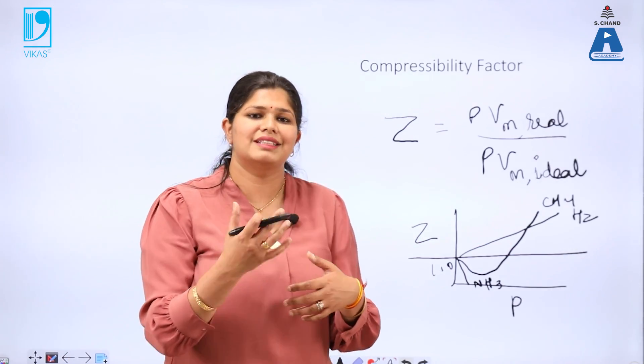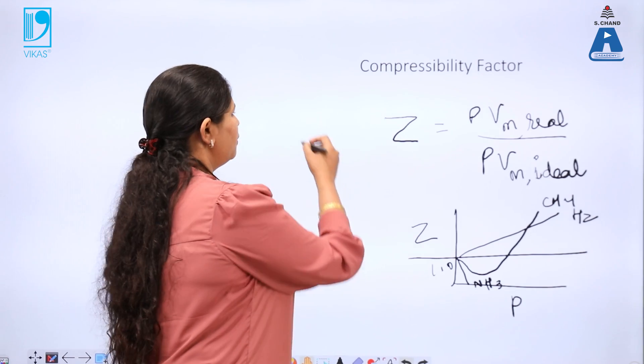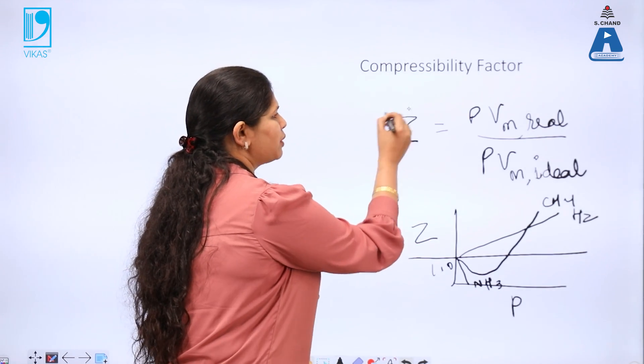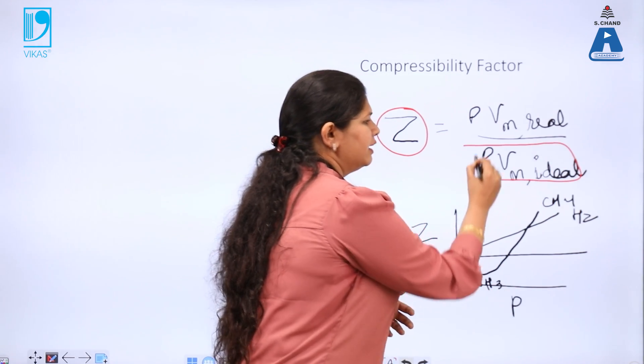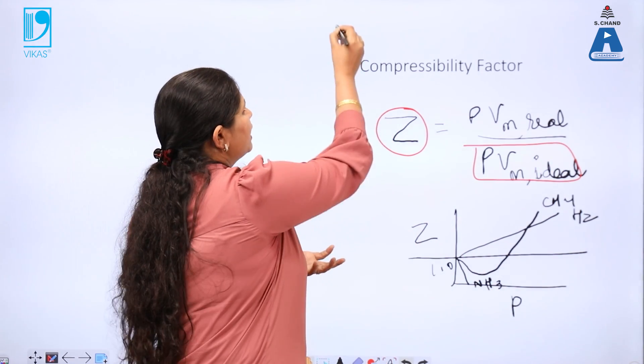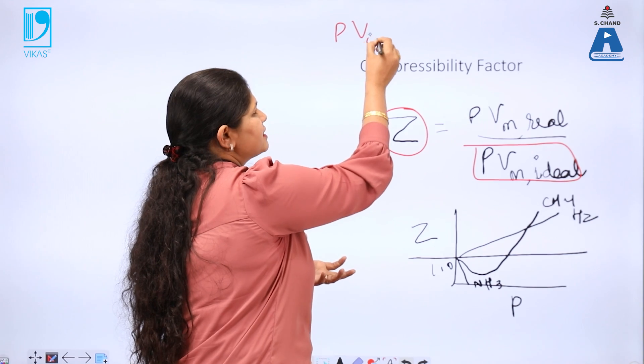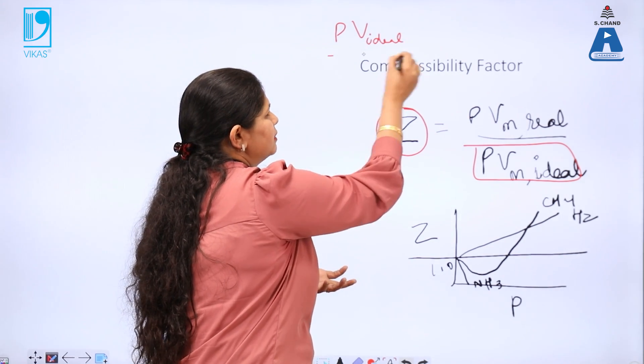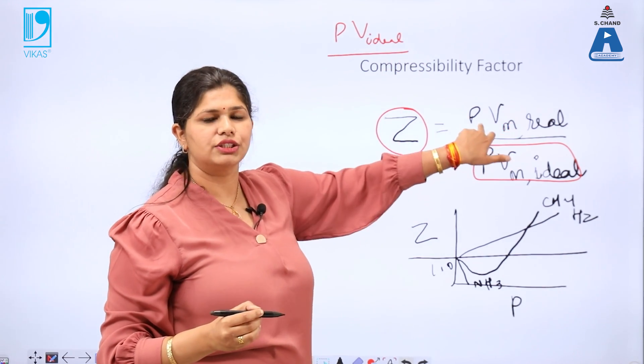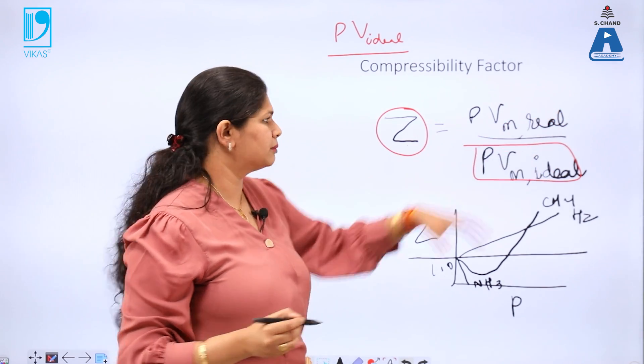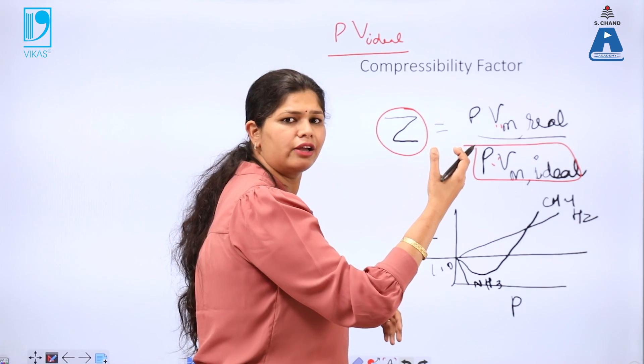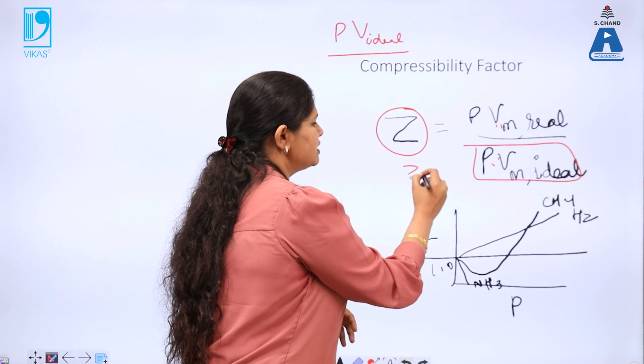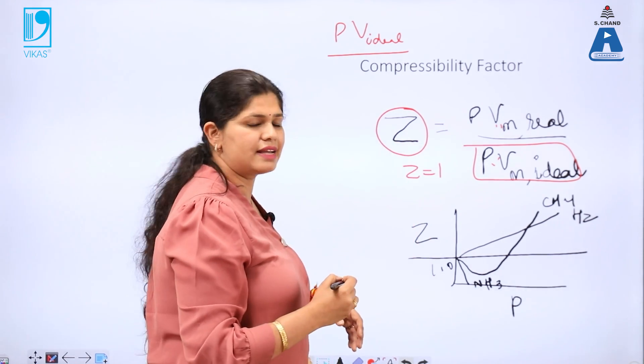How it was discovered? When we plot a graph between, this is one factor called compressibility factor. PVm ideal is the pressure and volume of the ideal gas system and this is the pressure and volume of real gas system. Ideally, these two should have been same if the gas is obeying ideal gas equation. That means Z is equal to 1 for an ideal gas.